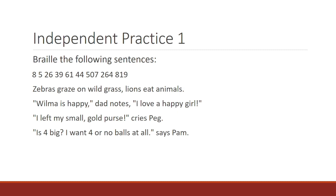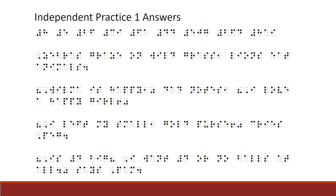The next sentence is: open quote, I left my small, comma, gold purse, exclamation mark, closed quote, cries Peg, period. The last sentence is: open quote, Is four big, question mark, I want four or no balls at all, period, closed quote, says Pam, period. On this last sentence, four is written as a number. Here are the answers for independent practice 1 in braille font. Be sure to check to make sure you have all of the indicators and punctuation marks.